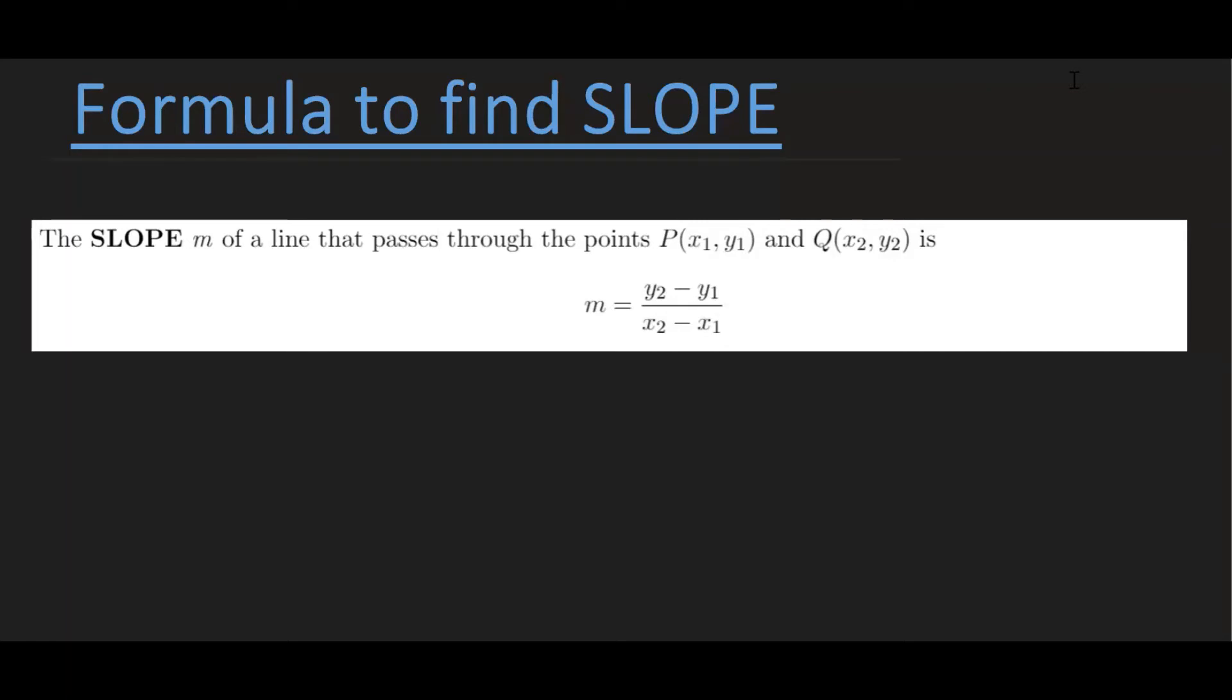So now that we have a better understanding of what a slope is, now let's look at the formula to find a slope of a line. The slope is denoted by using the letter m of a line that passes through any points P or Q. P has the coordinates x1, y1, and Q has the coordinates x2, y2 is given by this formula: m is equal to y2 minus y1 over x2 minus x1.